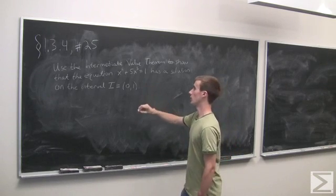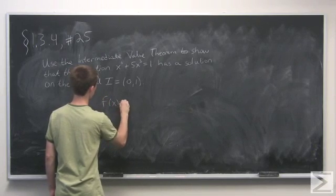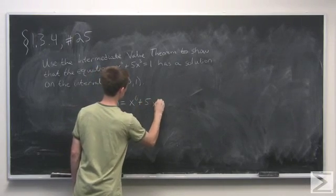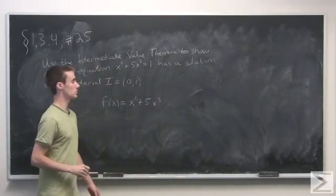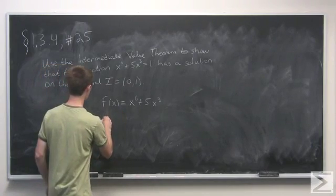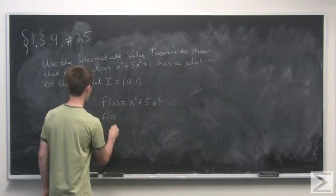If we let f(x) equal x^6 + 5x^3, then f is going to have to take on all values between f(0) and f(1).